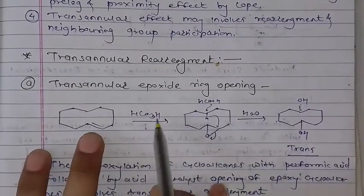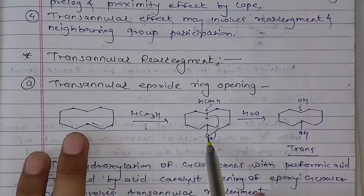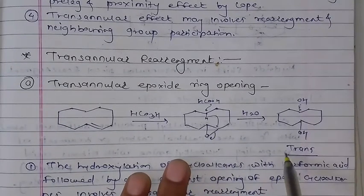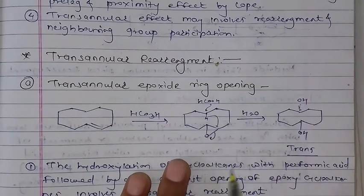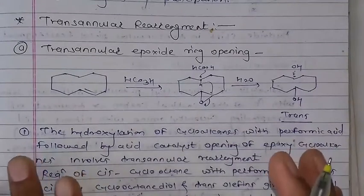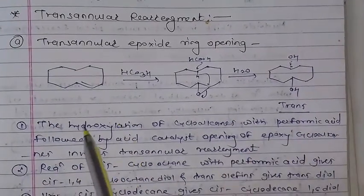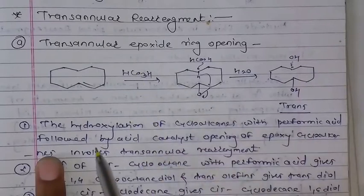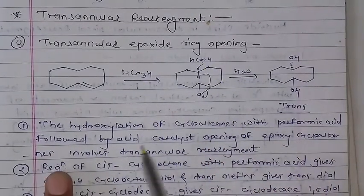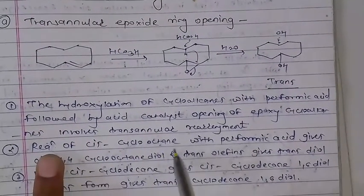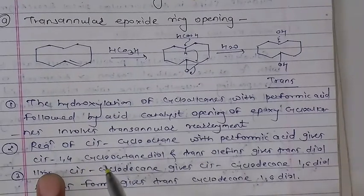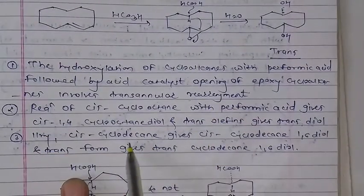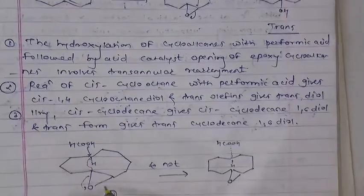So, for example, if you have an epoxy ring, you can break it down and make a mechanism. Write down this point: hydroxycyclooctane working with performing acid — you should use peracid to make bicyclo ring opening. Cyclooctane with peracid gives cis-1,4-cyclooctane diol via cis-olefin, and the trans-olefin gives the trans-diol. Next point: write down similar examples of the transannular effect, specifically ring-opening reactions.